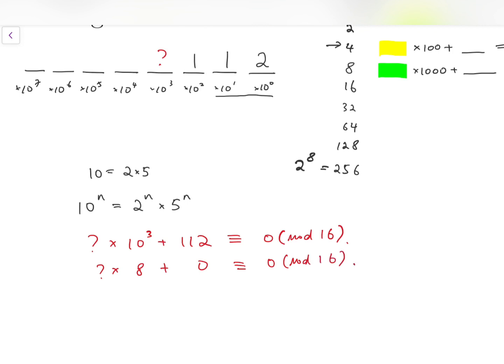So apparently we need the question mark to be 2, because 1 times 8 is not congruent to 0 mod 16. So for the red question mark, I'll replace it by 2, and then we iterate the process.